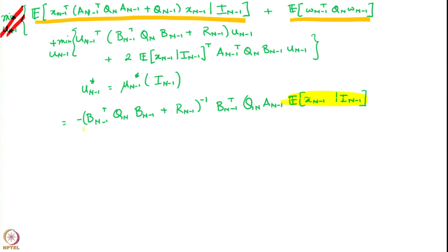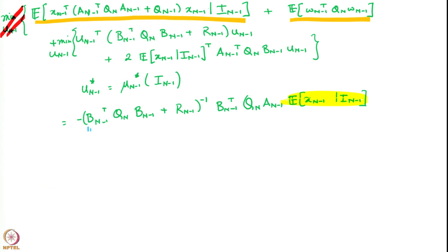In other words, it is a linear transformation of the conditional expectation of the state. Furthermore, if you go back to your lectures on problems with perfect state information, you would notice that this underlined matrix is in fact the same as the one we had in the case with perfect state information.